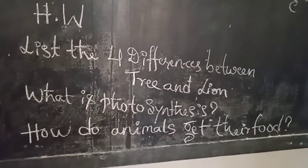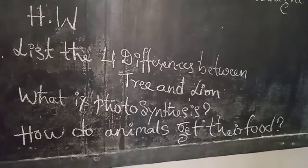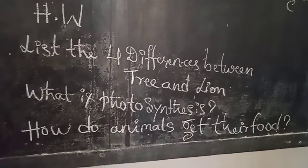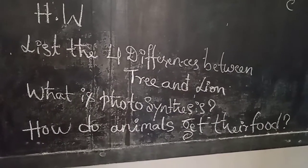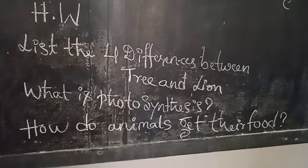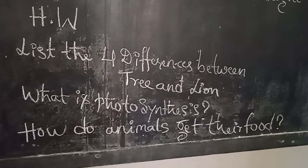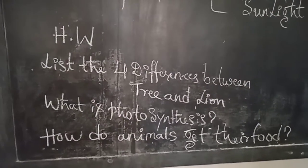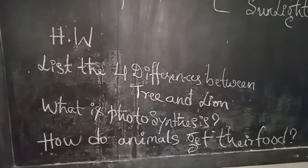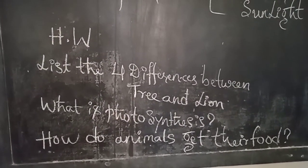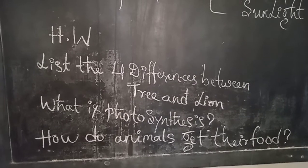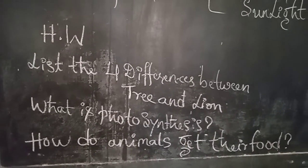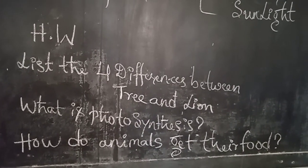This is your homework. List the four differences between a tree and a lion. What is photosynthesis? How do animals get their food? Homework is to be submitted to the teacher. Thank you.